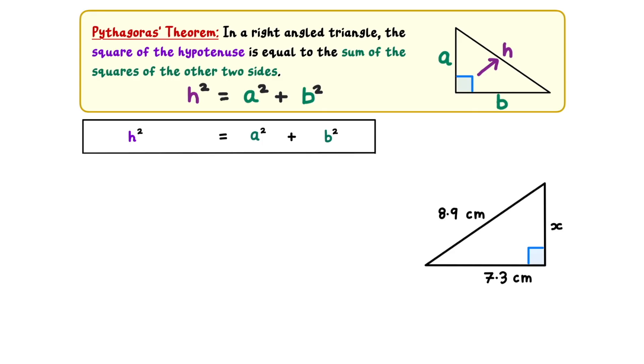Let's have a go at one final example. In this triangle, the sides are labelled as 8.9cm, 7.3cm, and X. To identify the hypotenuse H, we look across from the right angle. In this triangle, H is equal to 8.9cm. The other two sides should be labelled with A and B. Here we can set A equal to 7.3, and B equal to x.